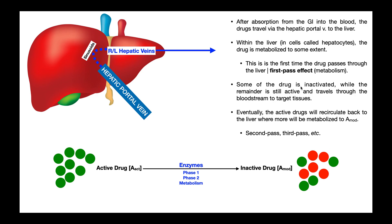Some percentage of these drugs have been inactivated before they ever get a chance to see the general circulation. This is described by a general term called the first pass effect, sometimes called first pass metabolism. For example, if we've got nine of these drugs and five have been inactivated, about 55% are now inactive, and only 45% of what we originally took has the potential to exert an effect. This metabolism is inactivating these drugs on their first pass through the liver.